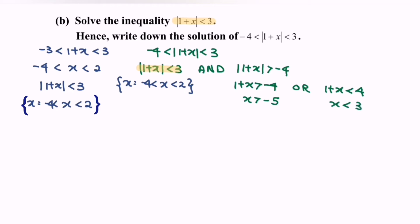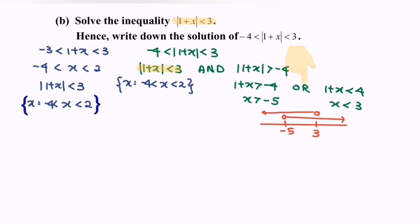Kindly illustrate the situation on the number line and locate the values — we have negative 5 on the left and 3 on the right. Illustrate the situation with empty circles towards the right and empty circles towards the left. In this case we have all — meaning we have to shade all the region on the number line. So the answer for this part will be all real numbers, meaning negative infinity to infinity, where negative infinity and infinity are not included.